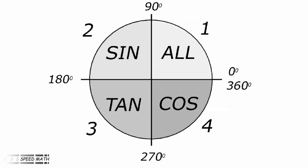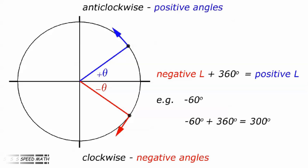Before we get to the problems, there are two very small topics to cover: negative angles and very large angles. We normally measure angles anticlockwise from the positive x-axis. Negative angles are simply angles measured clockwise from the positive x-axis. To work out the sine, cosine or tangent functions for these, all you have to do is add 360 degrees to them. So an angle of minus 60 degrees becomes 300 degrees, and we just take it from there. Your calculator will do the rest.